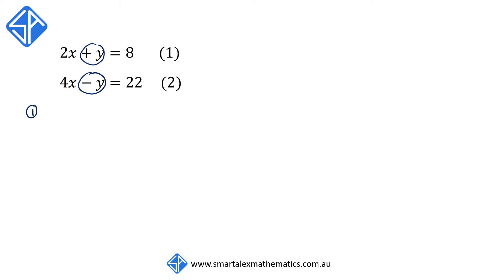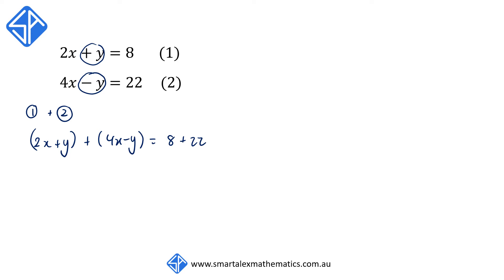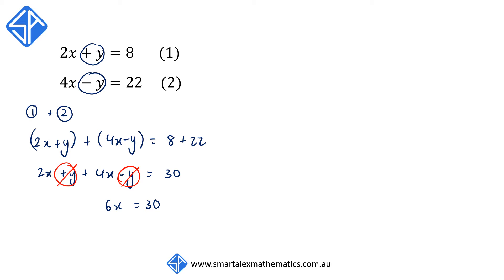If we add equation 1 and equation 2, on the left hand side we get 2x plus y plus 4x minus y, and on the right hand side 8 plus 22, which equals 30. We see that the plus y and the minus y terms cancel out, so the left hand side reduces to 6x is equal to 30. We then divide both sides by 6 and get x is equal to 5.